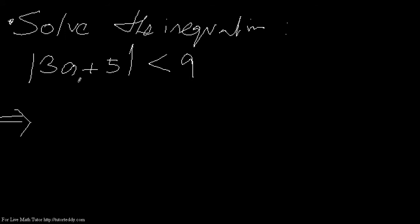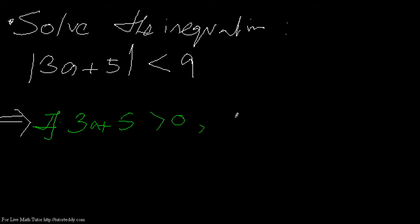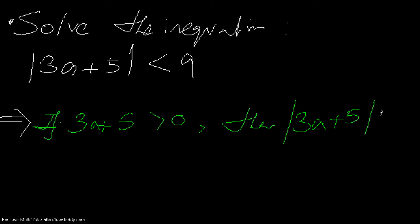First, we consider the value inside the mod — this can be greater than 0 or less than 0, meaning it can be positive or negative. If 3a plus 5 is positive, that is greater than 0, then mod of 3a plus 5 is less than 9.